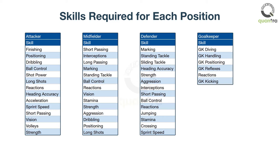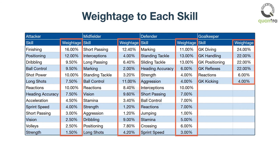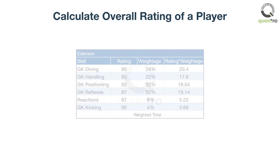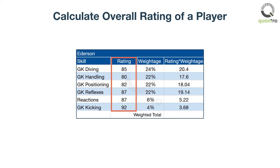Each of these skills is assigned a weight. Various skills and their weightages are collected from EA Sports. We have also collected the players' names of the top six clubs for the current season from the official Premier League website. Let's take the goalkeeper from Manchester City, Ederson. His ratings for goalkeeping skills are as follows. You can calculate the overall rating of Ederson by multiplying the ratings with their respective weights and taking the sum, which gives Ederson an overall rating of 84.08.